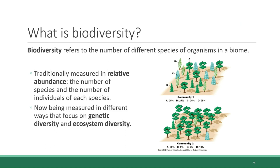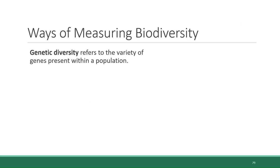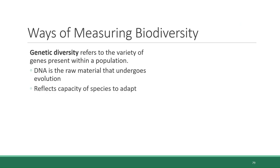Today, however, relative abundance is only one tool used to measure diversity, and there are other measurements being used to assess biodiversity in different ways, including genetic diversity and ecosystem diversity. Genetic diversity refers to the variety of genes present within a population. This is something that scientists didn't used to be able to assess, but now we have gene sequencing technology that allows us to look at how much variety exists within the genetics of a species. This is significant because DNA is the raw material that undergoes evolution, and greater genetic diversity reflects the capacity that a species has to adapt to changing ecosystem conditions.